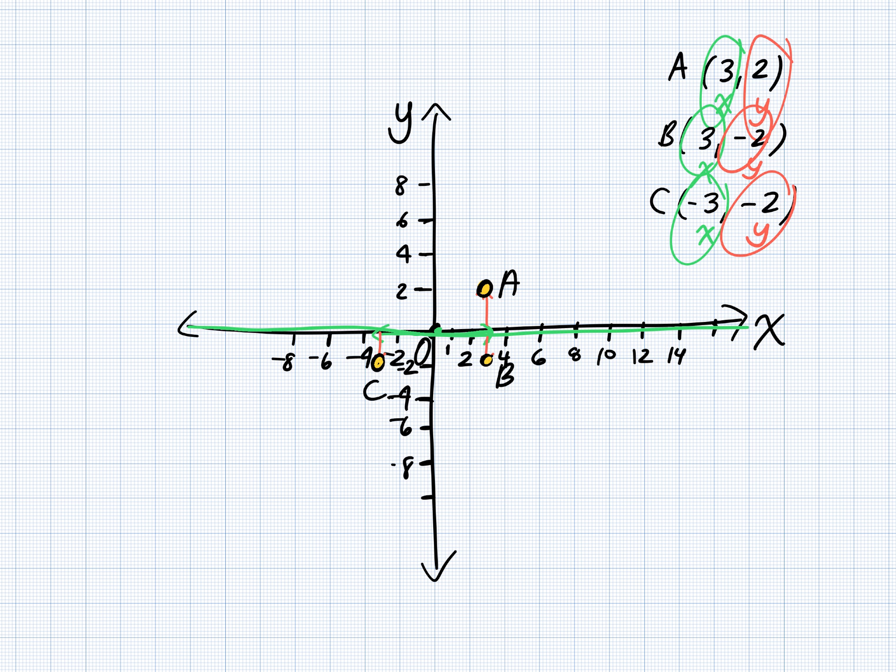Does everyone see that? Okay. And then the last point we're given is negative 3, positive 2. So again, negative 3. Am I going left or right on the X axis? Left. And am I going up or down? We're going to go up 2, and we're going to end up right here. So that is D.